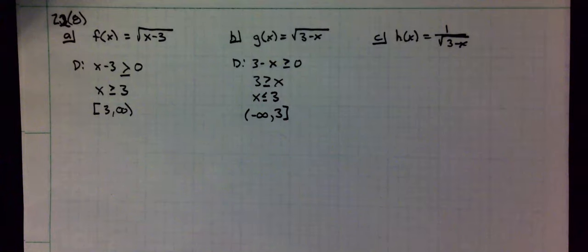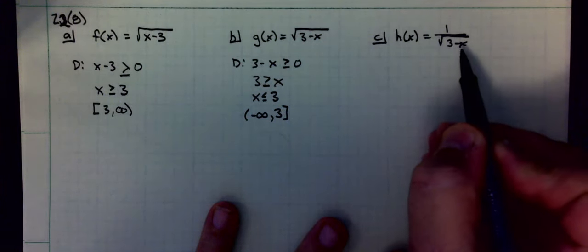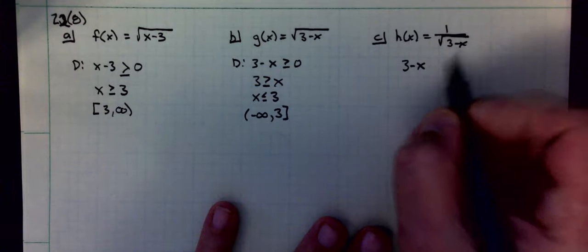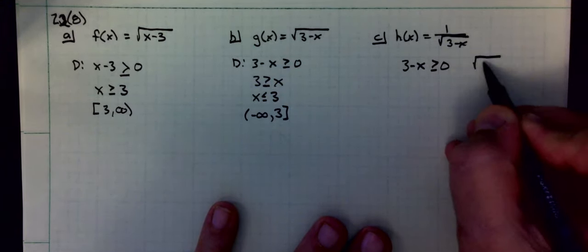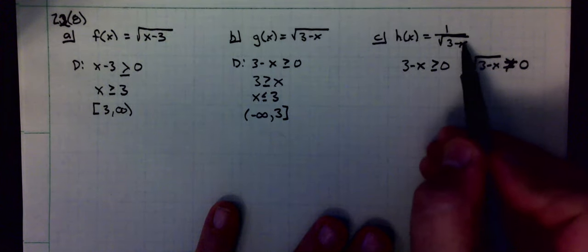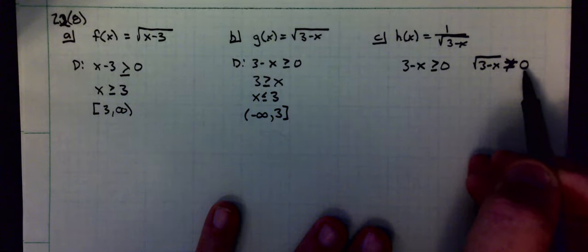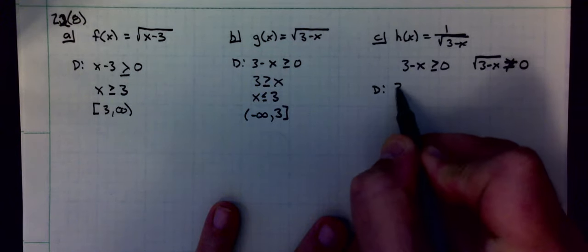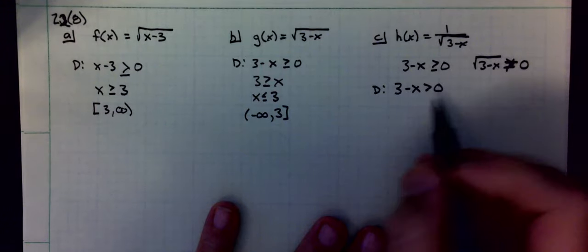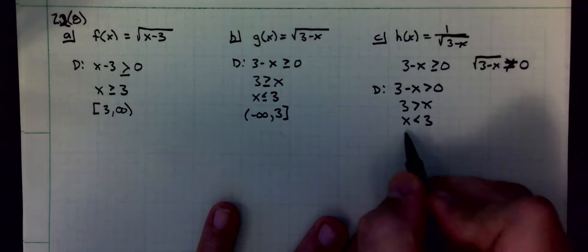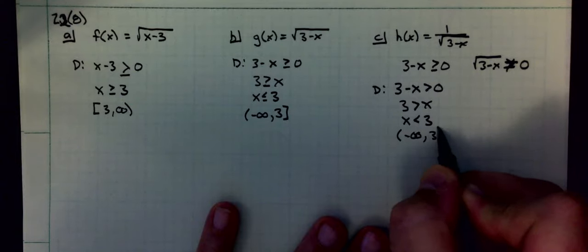The question asks, the domain of h of x is slightly different than the domain of g of x. How is it different? Here, I have to meet both requirements. Not only does 3 minus x have to be greater than or equal to zero, but the square root of 3 minus x has to be not equal to zero, because it's in the denominator of the fraction. The way to get the fraction equal to zero is by having an equal sign here. So the way I'm going to actually figure out the domain, I'm just going to do 3 minus x has to be greater than zero. Again, I'm going to add the x to both sides, flip the whole thing around. I'm going to put it in interval notation, negative infinity to three, round bracket.